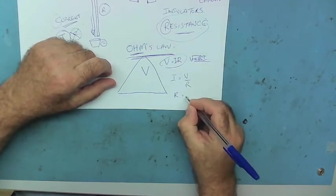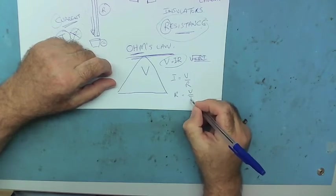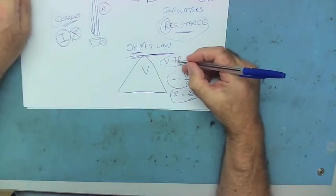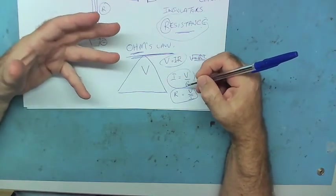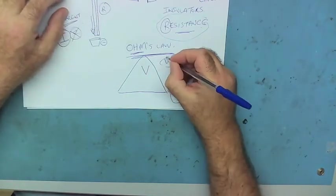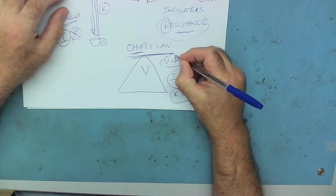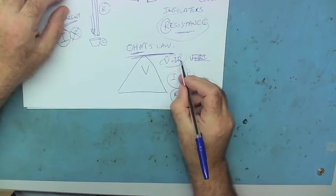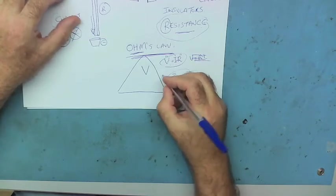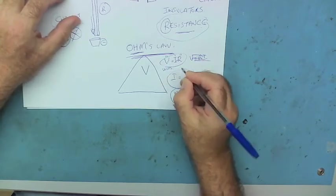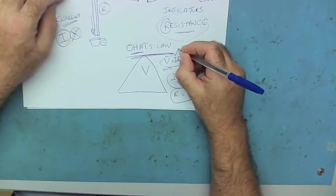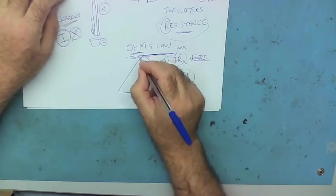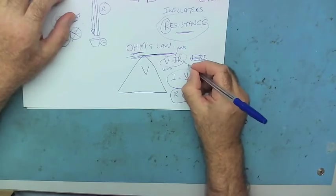Resistance equals V over I. So if you know any two of these, you can calculate the third one. If the voltage is 10 and the current is 1, then resistance is 10, because 10 equals 1 times 10. Voltage is measured in volts, current is measured in amps, and resistance, because this guy was so clever we need to honor him, is measured in ohms.